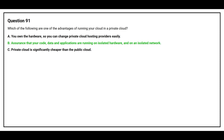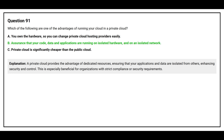The correct answer is Option B: Assurance that your code, data, and applications are running on isolated hardware and on an isolated network. Private cloud provides the advantage of dedicated resources, ensuring that your applications and data are isolated from others, enhancing security and control. This is especially beneficial for organizations with strict compliance or security requirements.